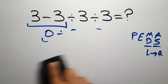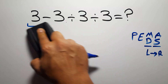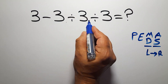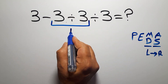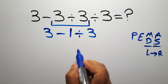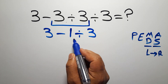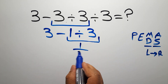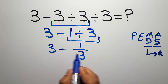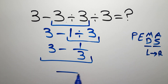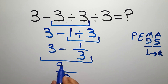So first, 3 divided by 3 equals 1, giving us 3 minus 1 divided by 3. Now we have to do this division: 1 divided by 3, which we can write as 1 over 3. So we have 3 minus this fraction. Our common denominator is 3.